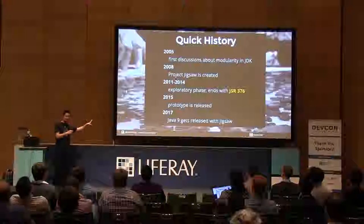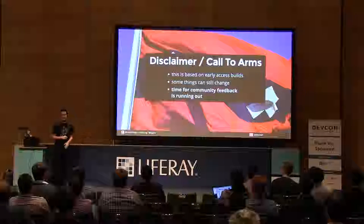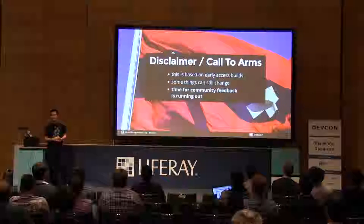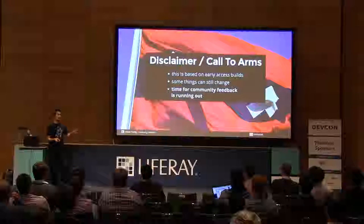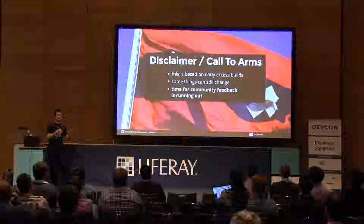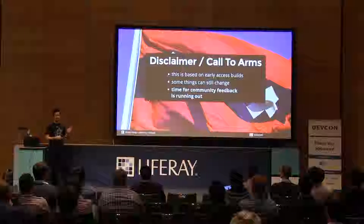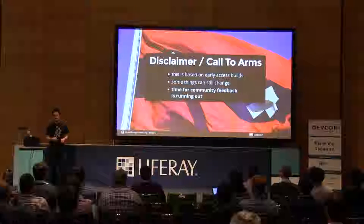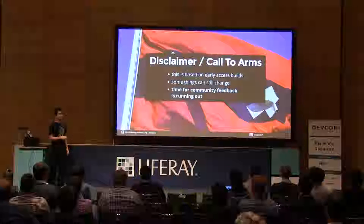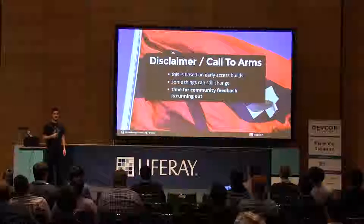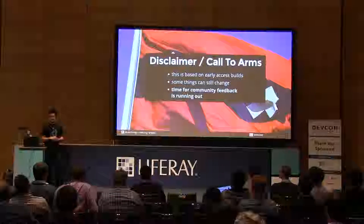Let's hope Java 9 really gets released in July. If it does, it will come with Jigsaw. Everything I tell you for the next 25 minutes is based on early access and could change. This part has not changed for the last year and I think it's unlikely that it will. But don't trust anything I say. Also, it's a time to give community feedback, and I think the OSGi community already has a voice in the process, but maybe it could be stronger.